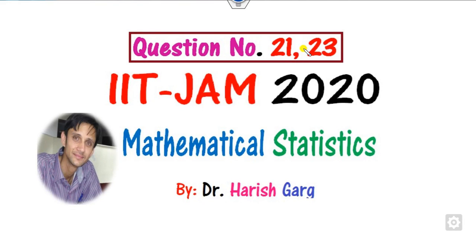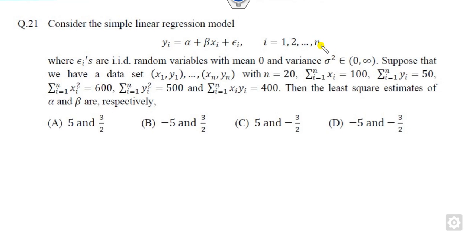Hello students, welcome to the next lecture on the IIT JAM mathematical statistics solutions. In this lecture we will see how you can solve question number 21 and 23 in a very simple manner. Question number 21 is related to simple regression models where you have to find the least square estimation of unknown parameters alpha and beta, while some information about the data set is given to you.